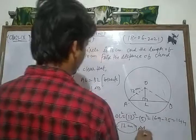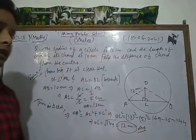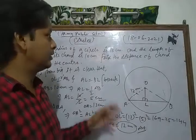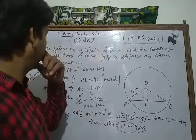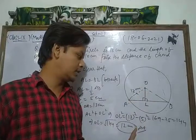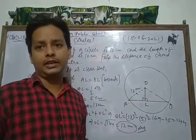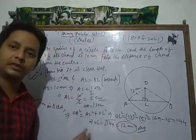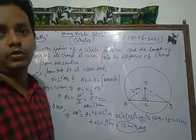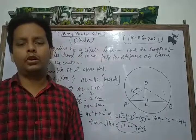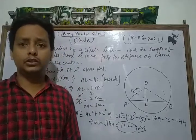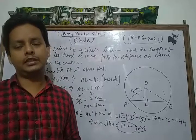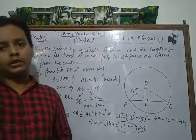Thus this is the required solution of the given question. The distance of the chord from the center of the circle is 12 cm. This question is based on the previous theorem which we discussed in this class. Please do more and more practice of that type of question. After that, you can solve each and every question of your NCERT exercise based on these topics.